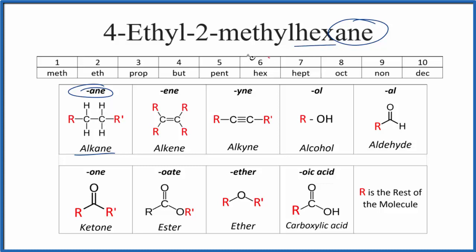Hex means six, so we'll have a chain of six carbons all single-bonded. Let's put those up and number them.